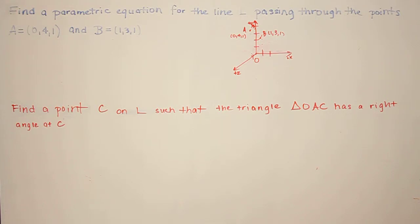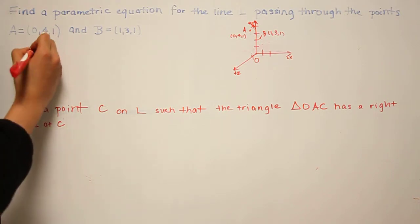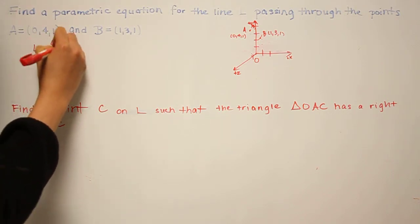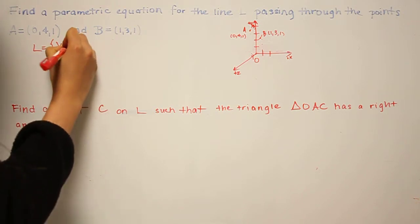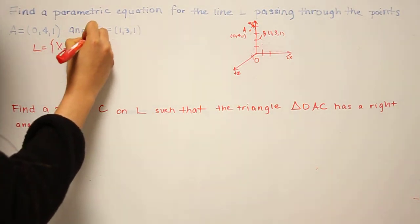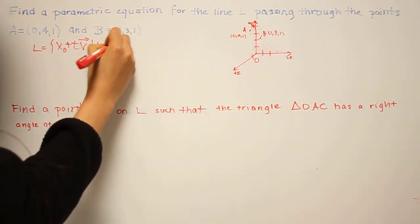So in general, the equation for a parametric line is of the form some point x0 plus a constant t times a vector v, where t is a scalar.